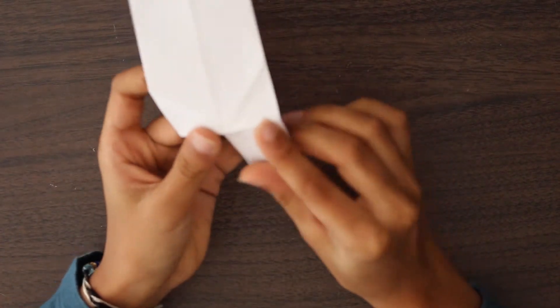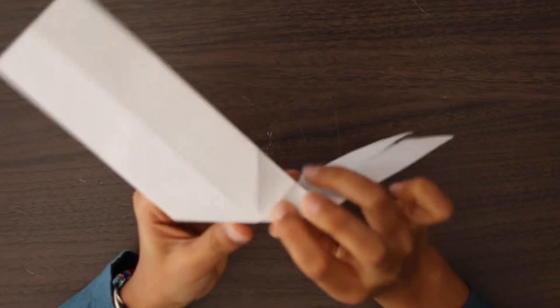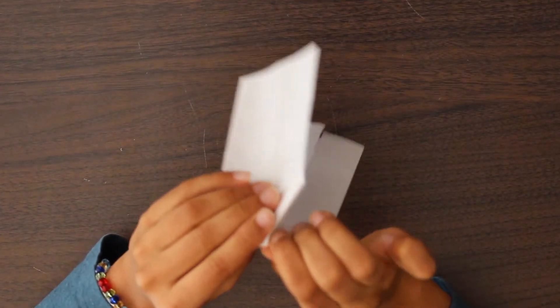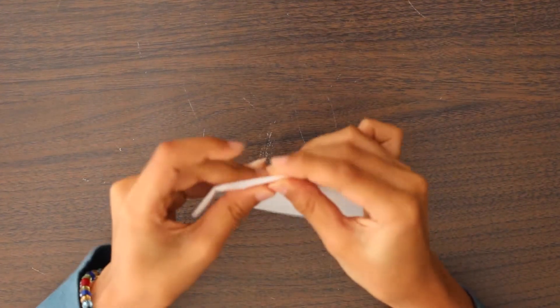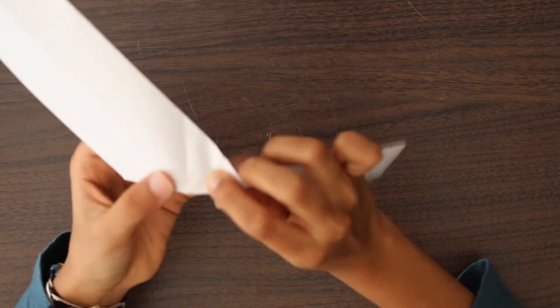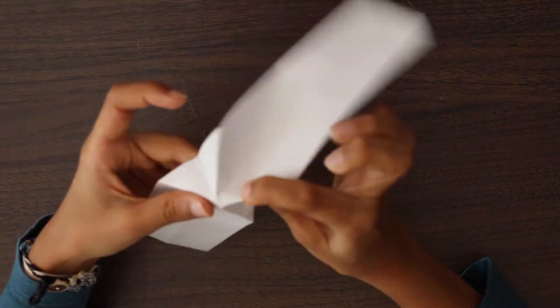Now, let's do a reverse folding. Make this crease and fold it in there. Do the same thing with the other side. Just reverse fold it inside.